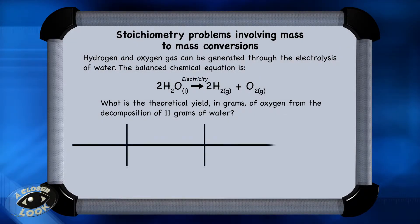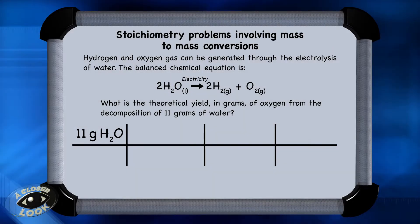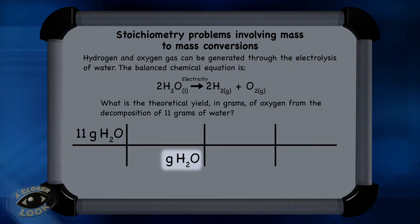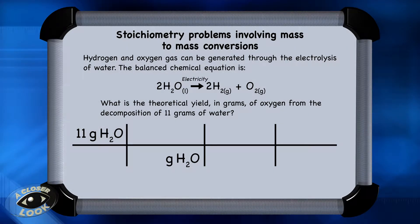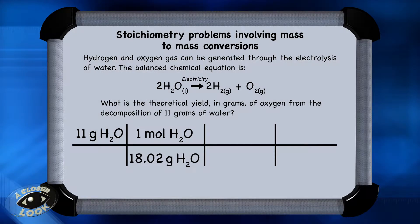Start this problem by taking what's given — in this case, 11 grams of water — and place that in the upper left-hand corner of a conversion chart. Next, bring down the units, grams of water, and in this first step, convert to moles of water using the molar mass of water, 18.02 grams, which we get from the periodic table. Put that in the denominator, and one mole of water in the numerator, which will allow you to cancel the units of grams of water.